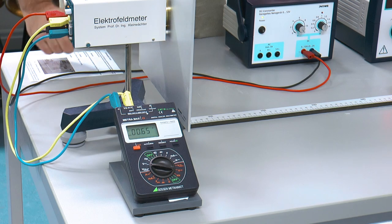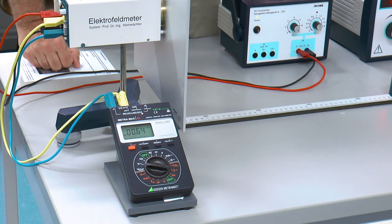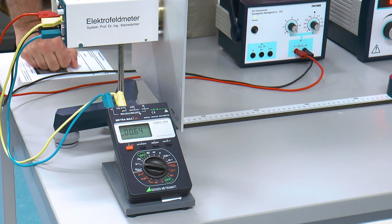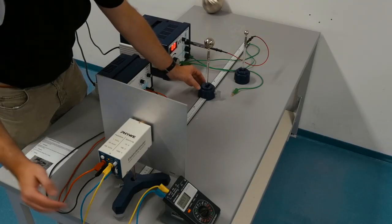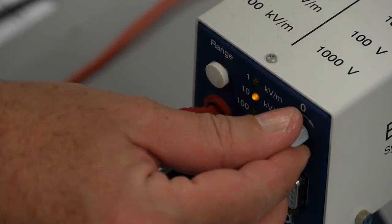Measure the field strength at five different charging voltages of 2 up to 10 kV, each time determining the field strength of the uncharged and charged sphere so that each measurement can be zeroed with the knob on the back of the electric field meter.